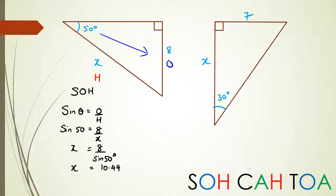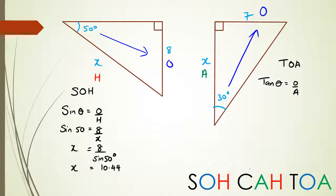For the second problem on the right-hand side, we're not dealing with hypotenuse. The side that's opposite is 7, and x is adjacent. So I've got A and O, which means I'm going to use TOA: tan theta equals opposite over adjacent. Tan 30 equals 7 divided by x. Rearranging: x equals 7 divided by tan 30, which gives x equal to 12.12.